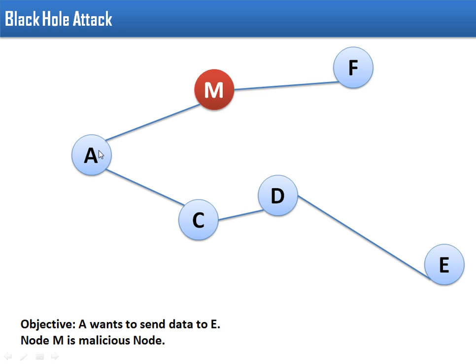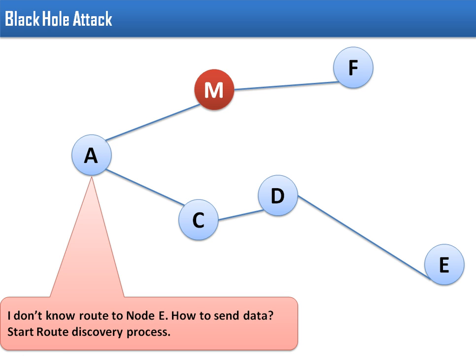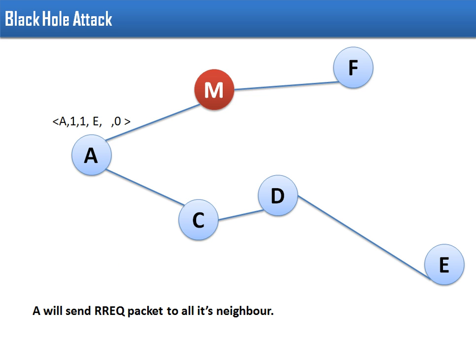So A will start route discovery. In this route discovery, A will send a RREQ route request packet. This packet, if you can see, the first attribute is the originator address or we can say source address. The second one is the source sequence number, which works as a kind of timestamp. The third one is the broadcast ID, this is the ID for the route request packet.